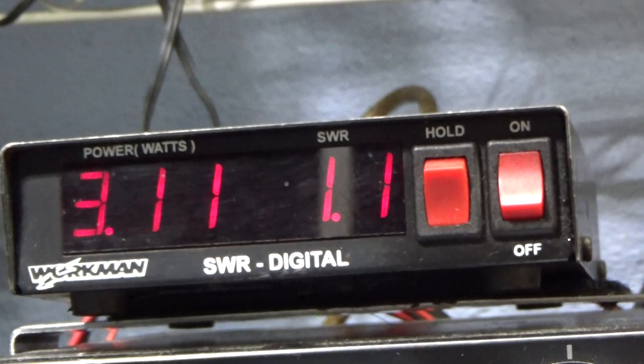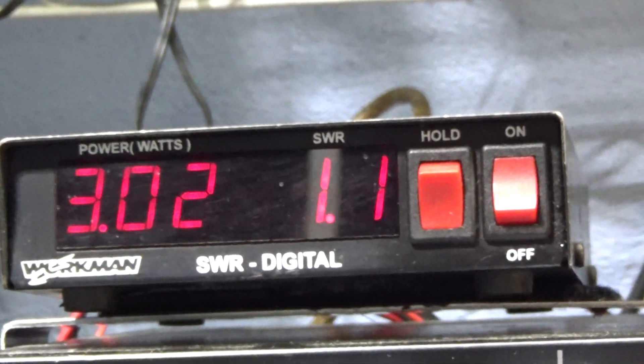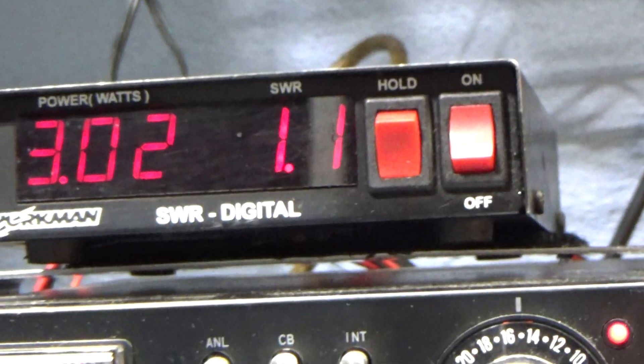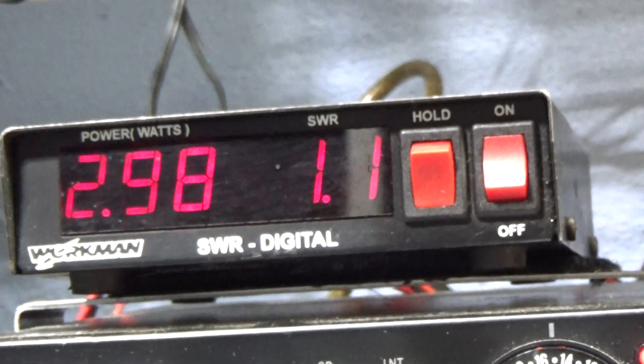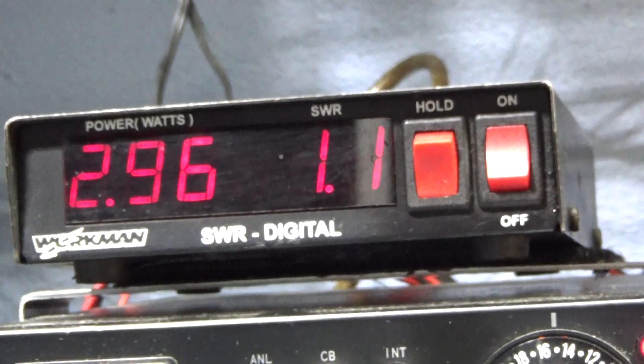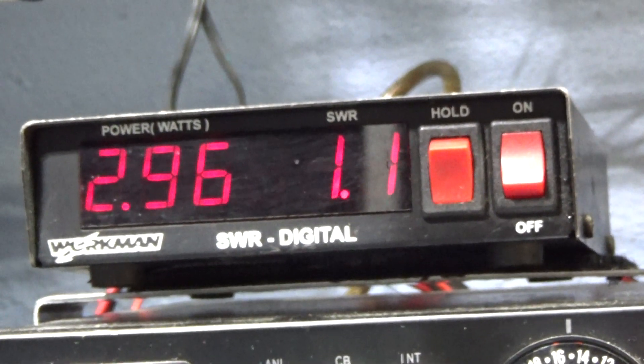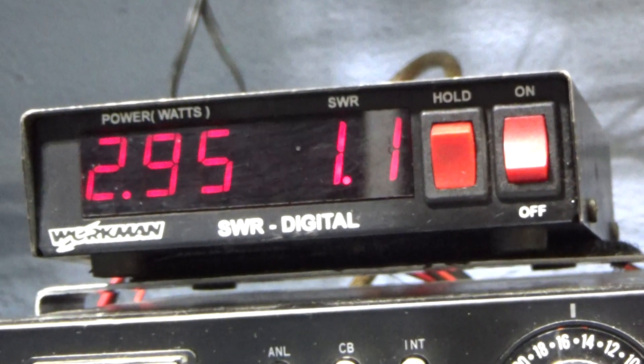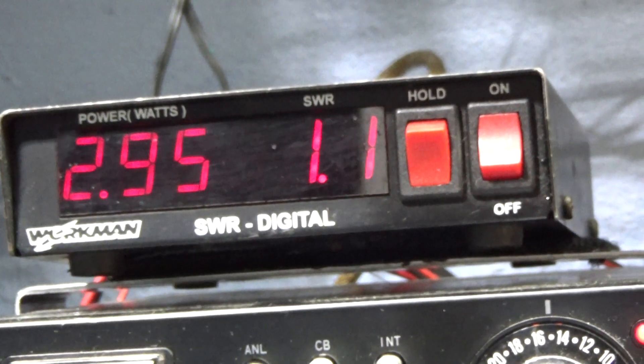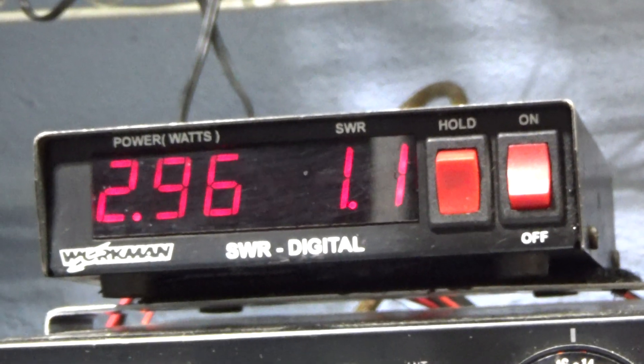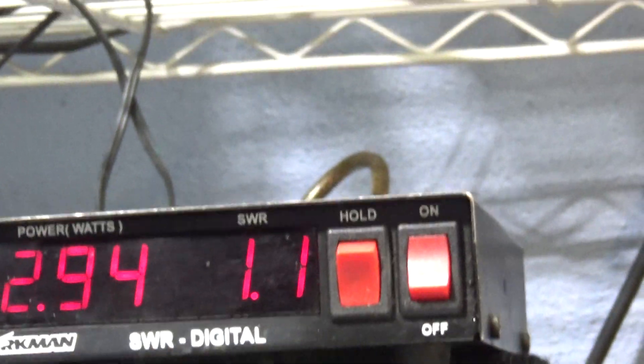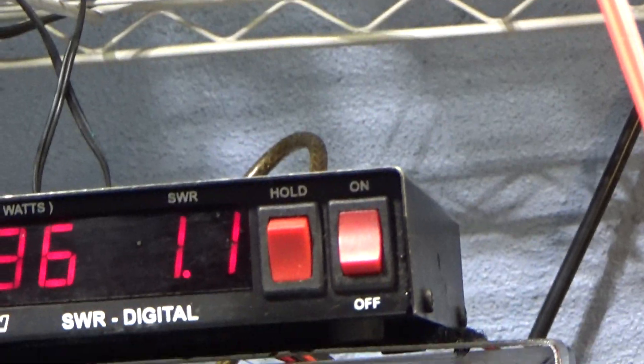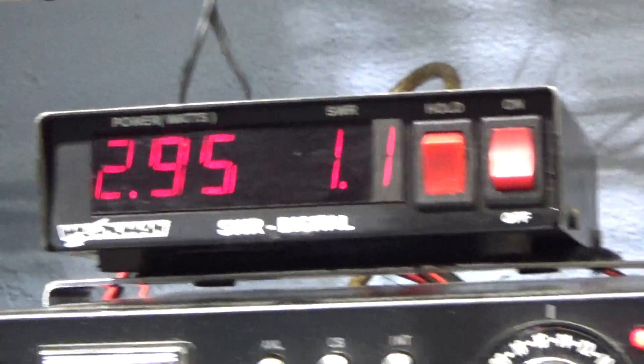I'm keyed down with the digital watt meter showing 1.1 SWR. If I took all the junk I had in line out and hooked it right to the dummy load I'd have a perfect 1.0 match. By the way, people talking about a perfect match - a perfect match is 1.0, not 1.1.